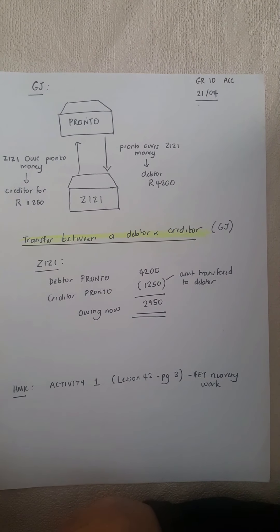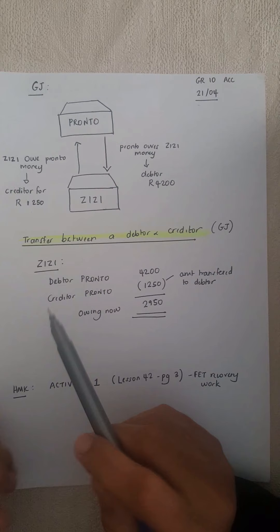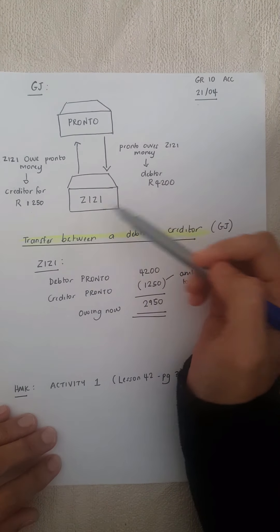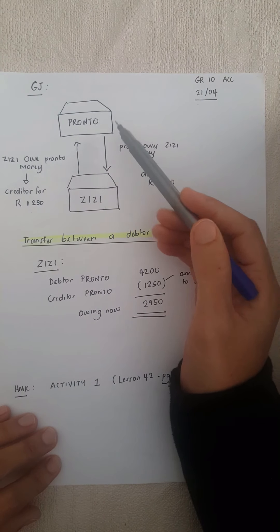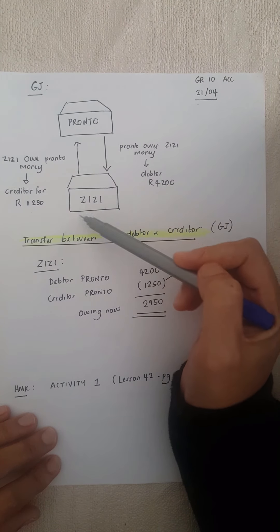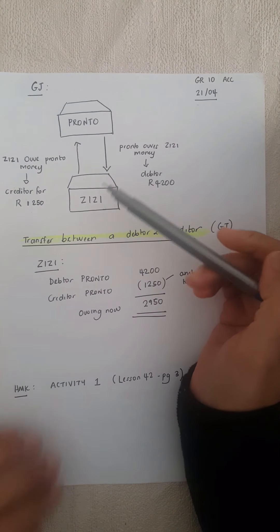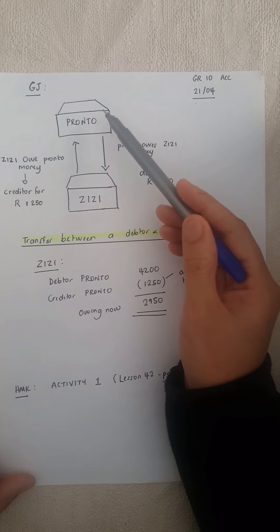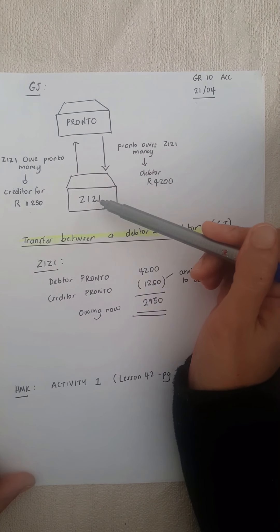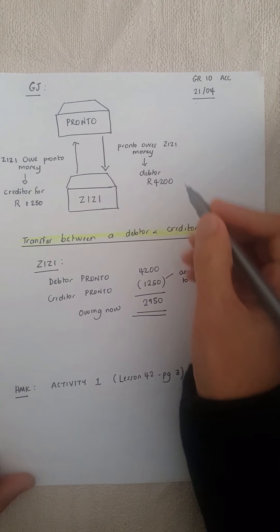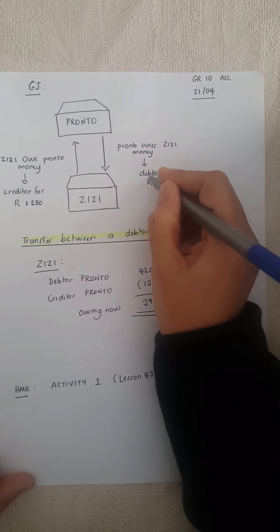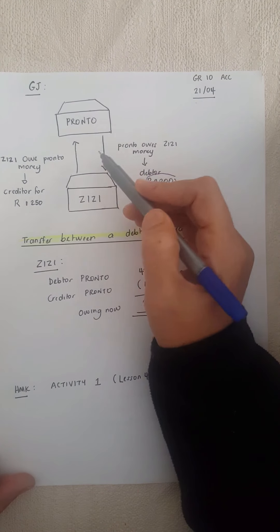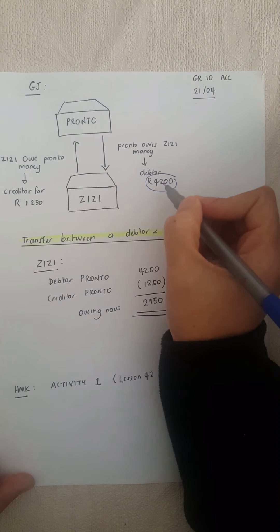We're getting on with General Journal and today we have to do a transfer between a debtor and a creditor. I'm using the example in the FET notes. They have Pronto and ZZ. We are looking from the point of view of ZZ Traders, so we are doing the books of them. What has happened is that Pronto is a business and they came to ZZ and bought for 4,200 rands, so they are owing ZZ 4,200 rands.